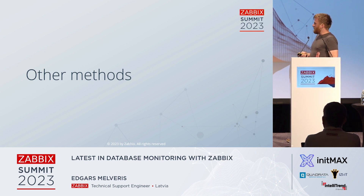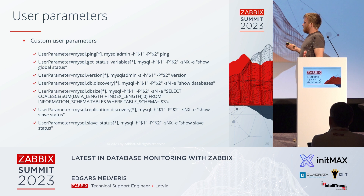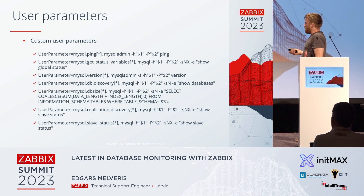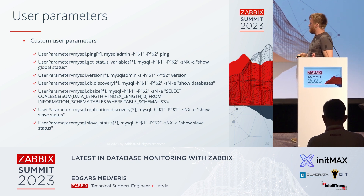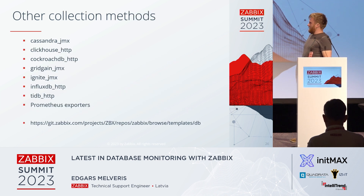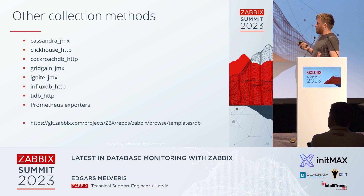We also have some other methods. User parameters are a universal tool for everything — if you can execute a command and get back a result, you can use a user parameter to collect such values. This used to be the main approach for monitoring databases, but right now I would not start using it. If you still have it, it works. We also have other database types and different collection methods. Java items could be used to monitor some, and HTTP items could be used if the application has a standard API. Dependent items can then extract the metrics needed.